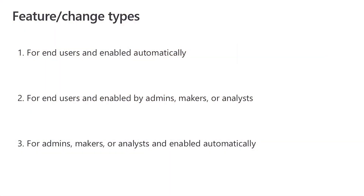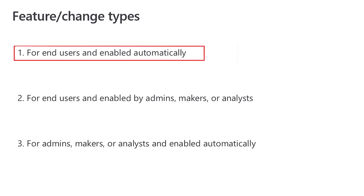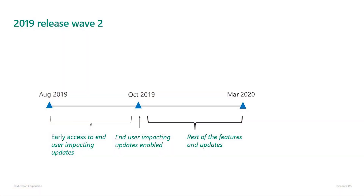In summary, the upcoming release will include features and updates that impact your end users and will be updated automatically. You will have early access to validate your applications with these updates in a non-production environment and train your end users accordingly. Only the end-user impacting changes which are enabled automatically are part of this early access. The rest of the features and updates will be offered from October 2019 to March 2020.